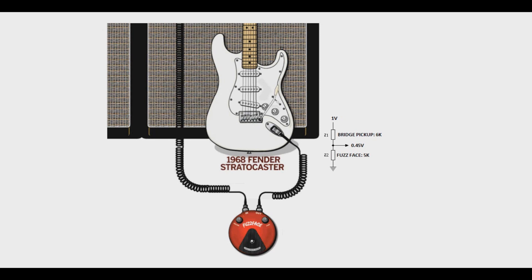A guitar pickup has inductance, resistance, and capacitance, and that qualifies as a complex signal source, which here we will label as Z1. A guitar pedal also has its own impedance to the guitar signal at its input, which is represented here as Z2 going to ground.